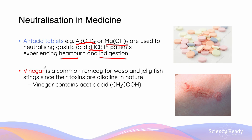In the opposite scenario, we use vinegar, which is a common remedy for things like wasp and jellyfish stings. This works because the toxins from wasp and jellyfish stings are alkaline in nature, and vinegar contains acetic acid, CH3COOH.